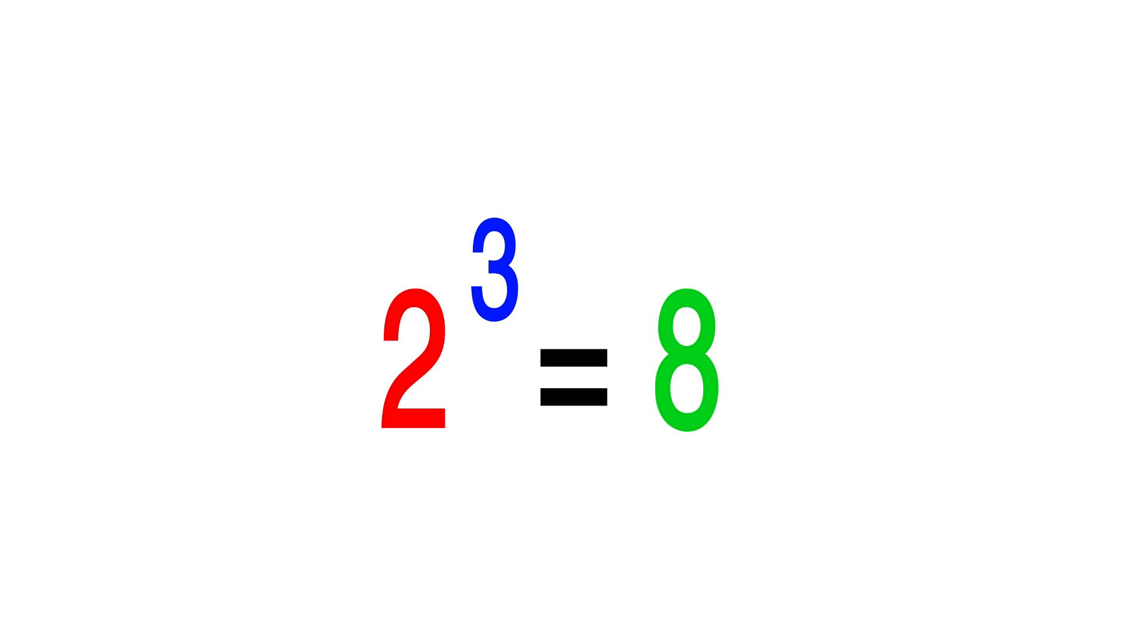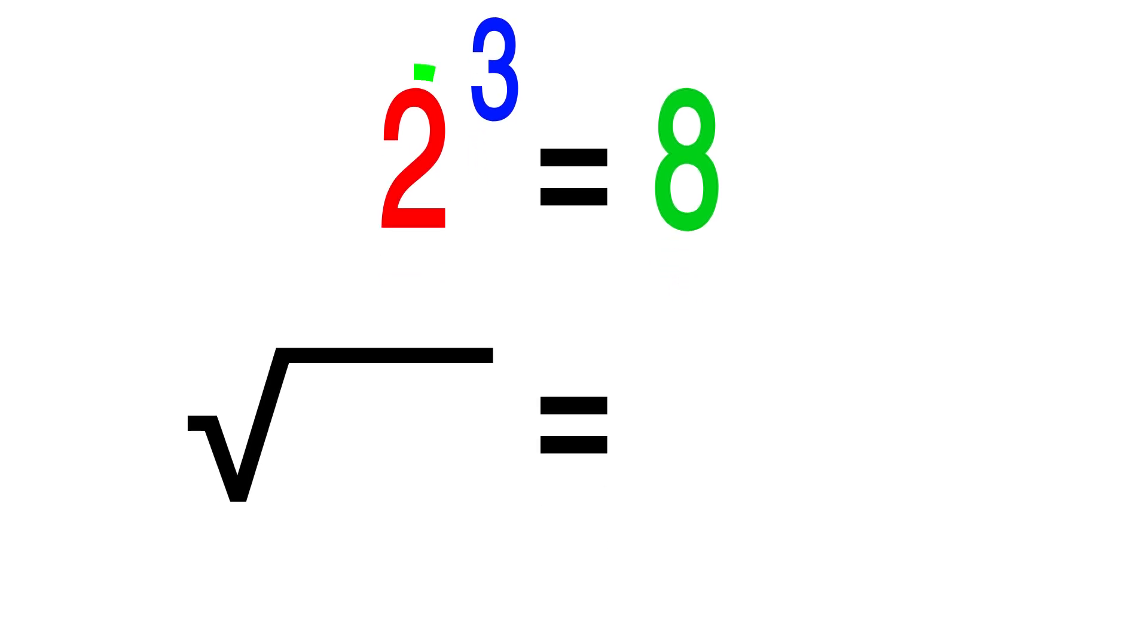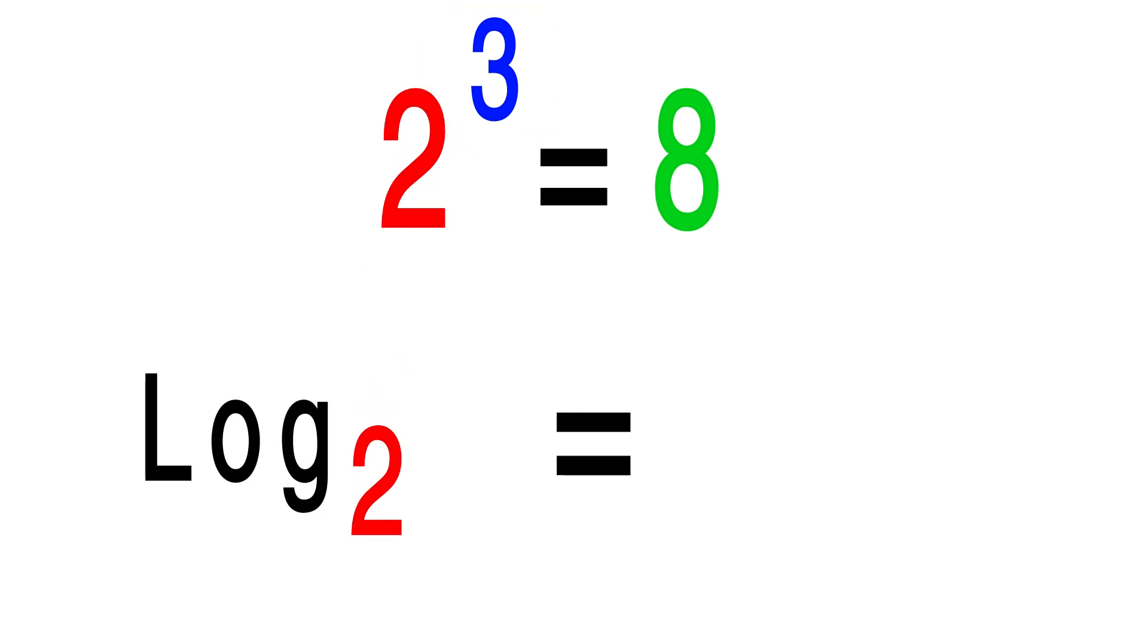Here we have 2 to the power of 3 equals 8. This is asking us that if we send 2 to the power of 3, what do we end up with? Oh, well, 8. Now, a root is asking us what this number is. So, what number to the power of 3 equals 8? Oh, well, 2. And we arrange the equation to look like this. Now, log is asking us what this number is. It's looking for the exponent. So, 2 to the power of what number equals 8? That equation is arranged like this. And it would be read like, what is log base 2 of 8? The answer being 3.